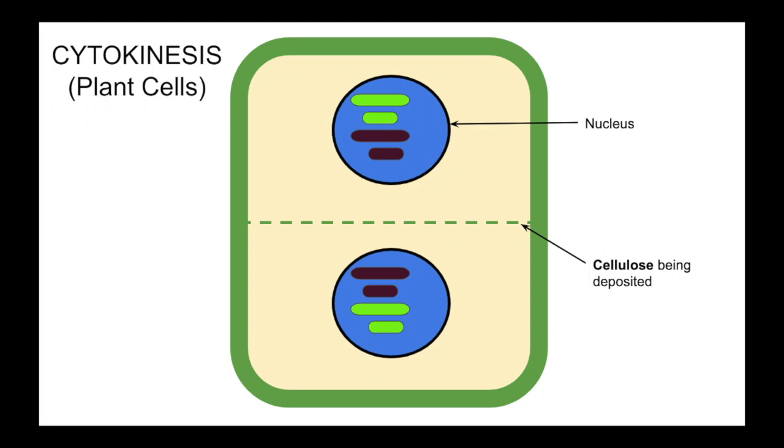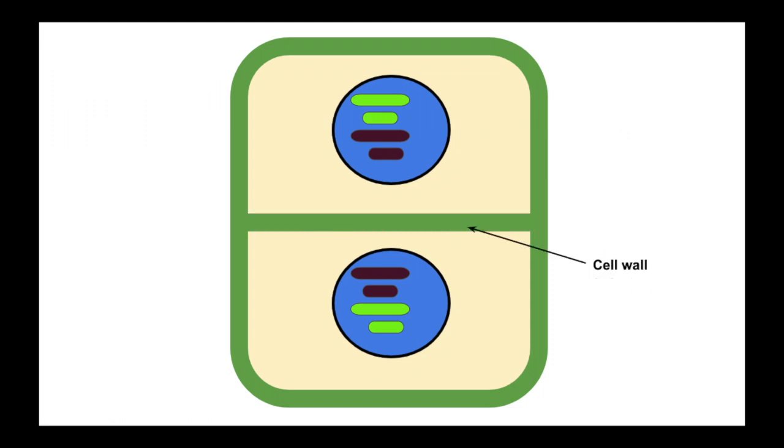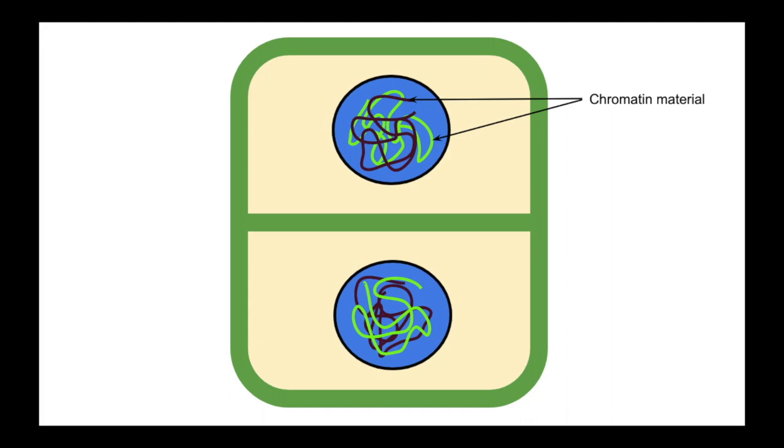Cytokinesis differs in plant cells through cellulose being responsible for the formation of a cell wall, and this separates the two daughter nuclei.